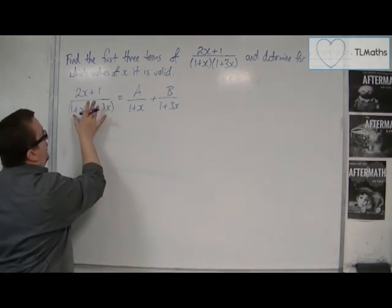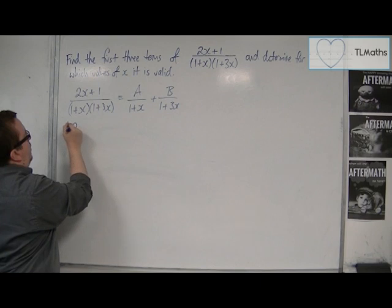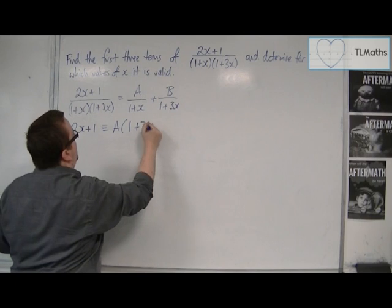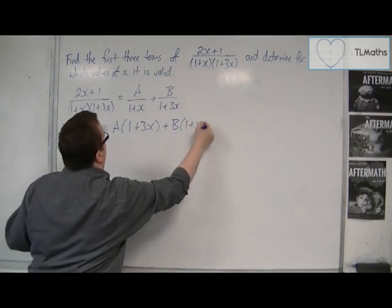I then want to multiply both sides by these two brackets. So I'm going to get 2x plus 1 is equivalent to a times 1 plus 3x plus b times 1 plus x.